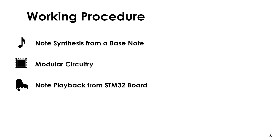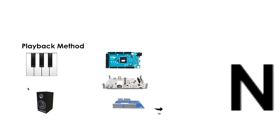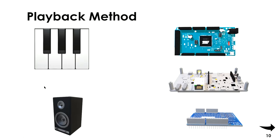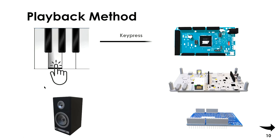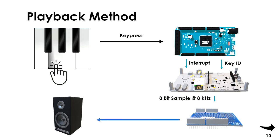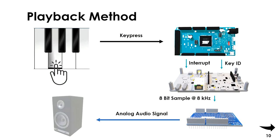Finally, we will have an overview of the note playback method. When a key is pressed, the Arduino DUE board detects the key press and sends an interrupt signal to the STM board along with the corresponding ID of the pressed key. The STM then loads the audio sample of the note and sends it to the digital-to-analog converter, generating the output audio.